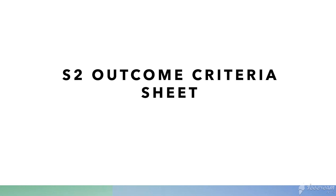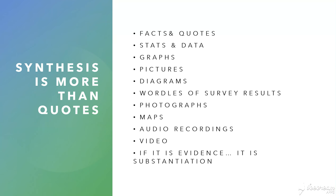When we look at the outcome criteria sheet, we're being assessed on the need for thorough and insightful use of evidence. That means you don't just pick anything willy-nilly — you have to think about your sources and what's going to be better. It's more than just including a bunch of quotes. It might be how you use your stats and data, diagrams that explain how something functions, wordles showing survey results, photographs, drawings, or even videos. There are so many different ways — if it's evidence that proves your point, it's substantiation.